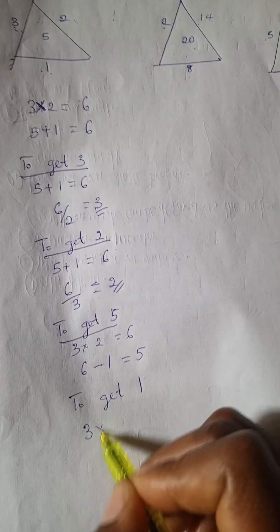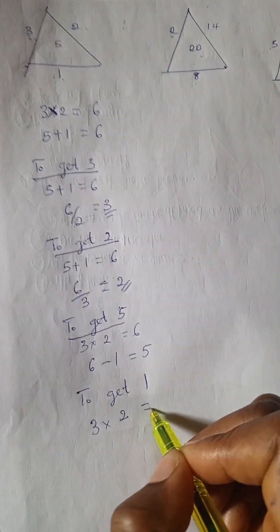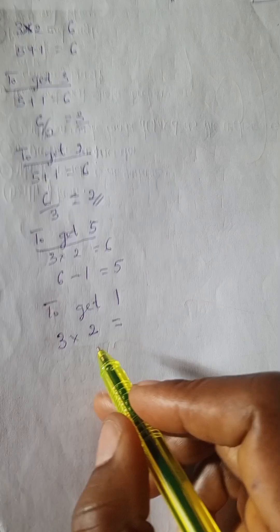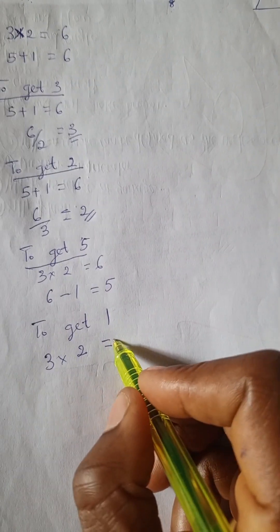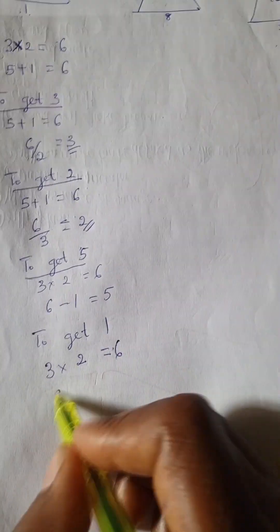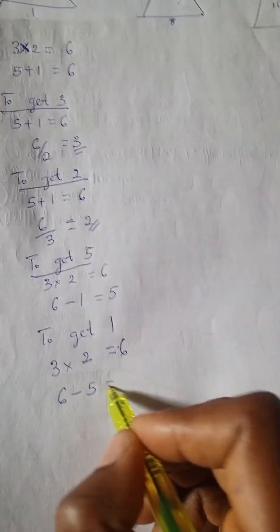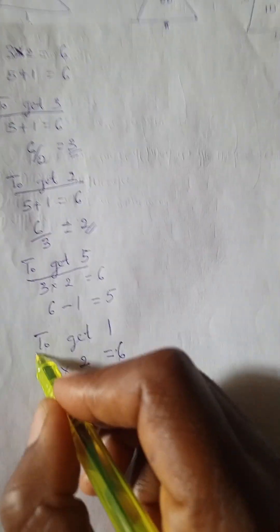3 times 2 is 6, so 6 minus 5 is 1. That's it for this example. Now, if you apply the same method here, you're still going to get the same thing.